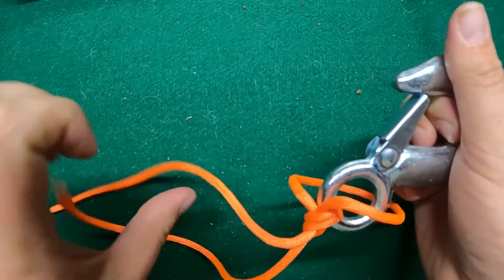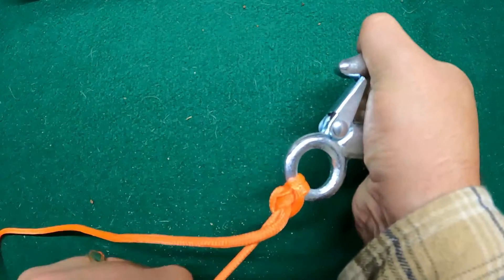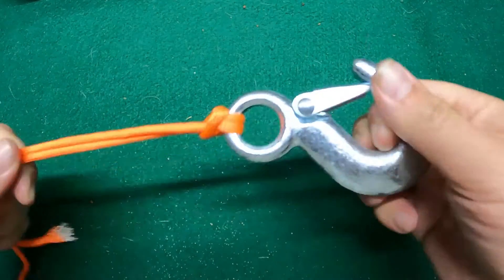I usually like to grab the tag end first and try to pull it to tighten it up. And then I'll grab the line itself and tighten that up and then double check the tag end. Make sure it's all tight and good.